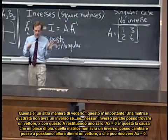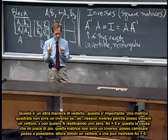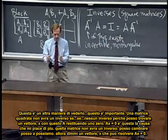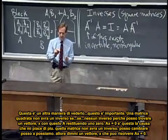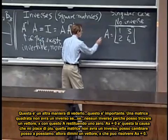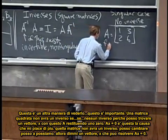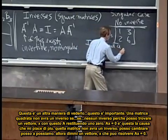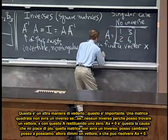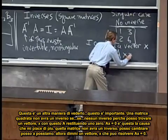This is another way to see it. A matrix has no inverse. Now, this is important. A square matrix won't have an inverse if I can find an x, a vector x, with A times x giving zero.